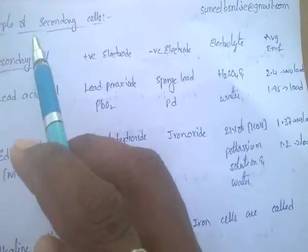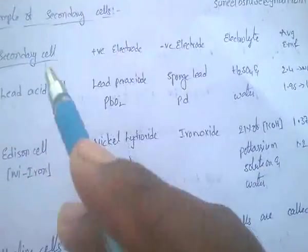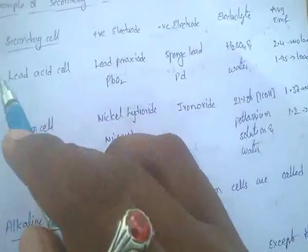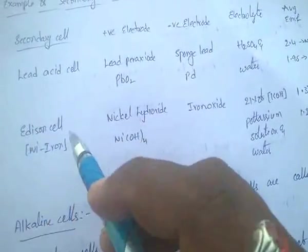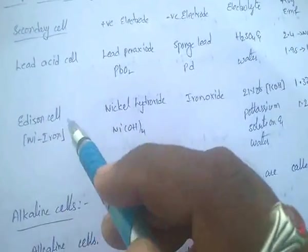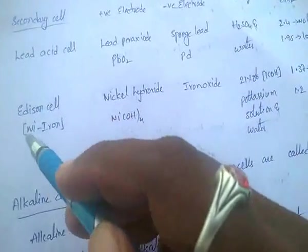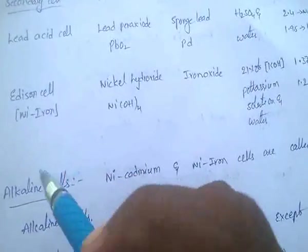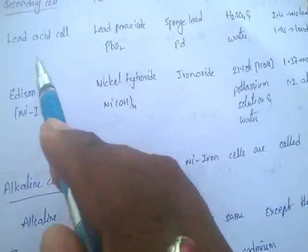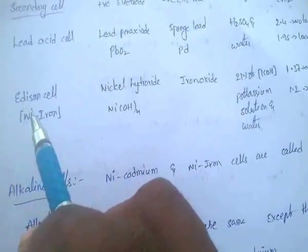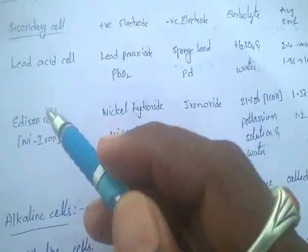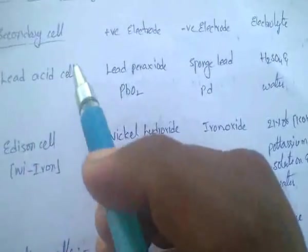Examples of secondary cells: secondary cells are mainly lead acid cells and Edison cells. Edison cells are also called alkaline cells. Alkaline cells are mainly of two types: nickel iron (Edison cells) and nickel cadmium cells.